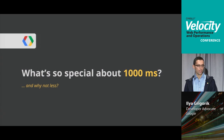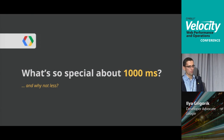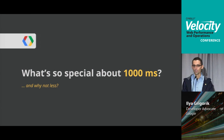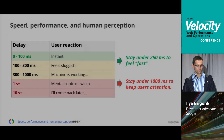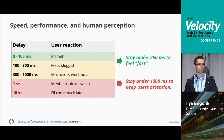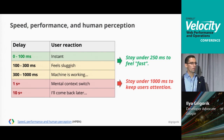The first question you should ask is: what's so special about 1,000 milliseconds? It's not a random number. It turns out that speed and performance are relative metrics — there is such a thing as fast enough, and it really depends on your context.